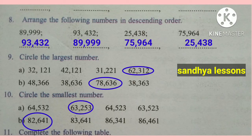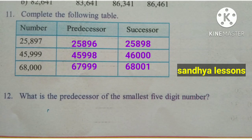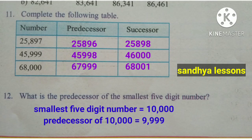Ninth question: circle the largest number. Largest from group A is 62,312; largest from group B is 78,636. Tenth question: circle the smallest number. Smallest from group A is 63,253; smallest from group B is 82,641. Eleventh question: complete the predecessor and successor table. For 25,897: predecessor is 25,896; successor is 25,898. For 45,999: predecessor is 45,998; successor is 46,000. For 68,000: predecessor is 67,999; successor is 68,001.